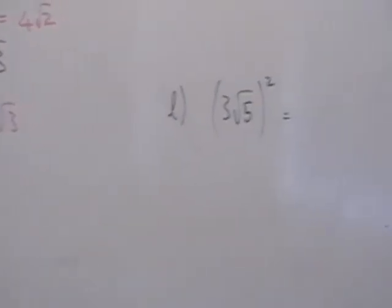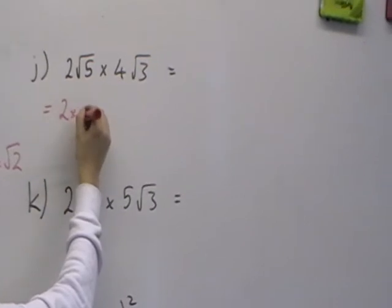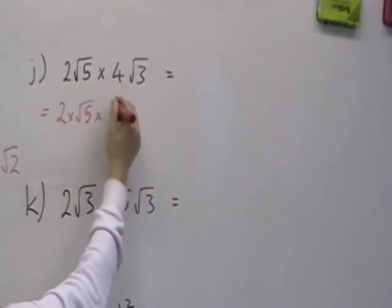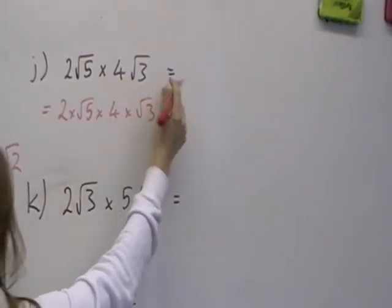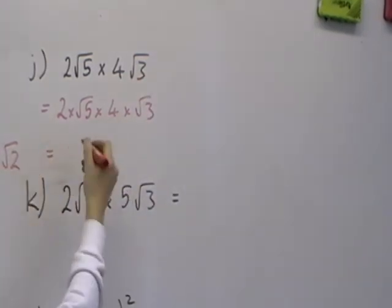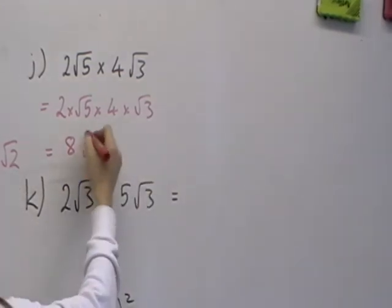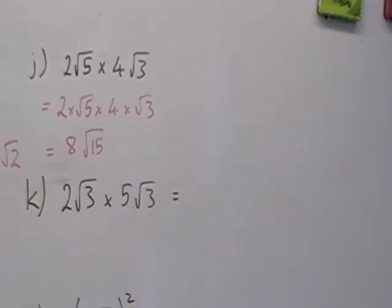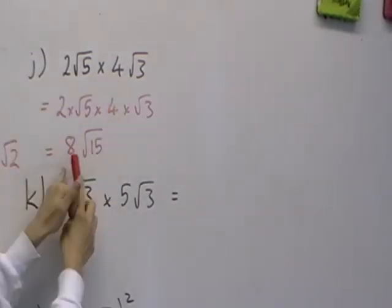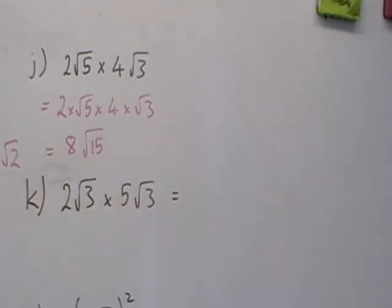Moving on to J. That is the same as 2 times root 5. That is the same as 4 times root 3. So the 2 times the 4 will multiply to give the 8. And the root 5 times the root 3 will multiply to give root 15. If you wish to go straight to the answer, that is okay. You multiply the 2 and the 4 together to give the 8, and then you multiply them together to give the root 15.